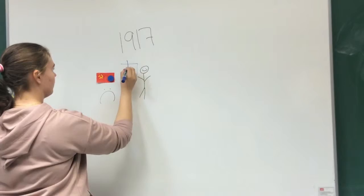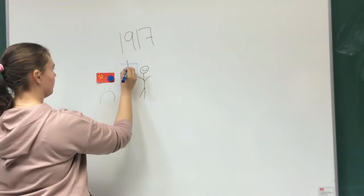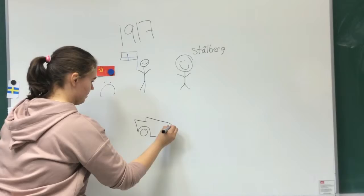1917 Finland became independent. K.J. Ståhlberg was made the first president. Cars popped up, radio broadcasts started airing and movie theaters opened. Multiple generations still lived in the same house.